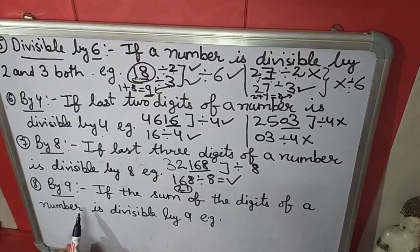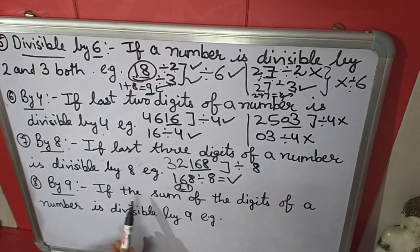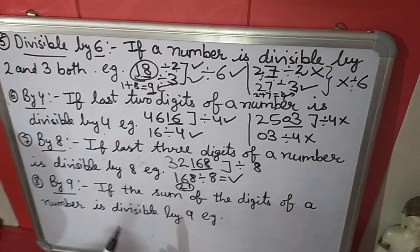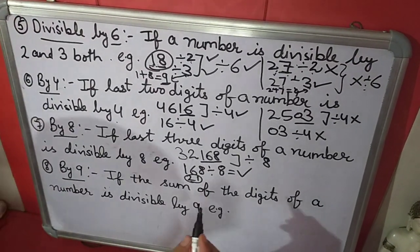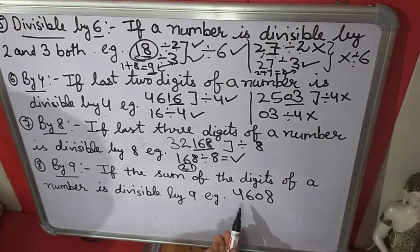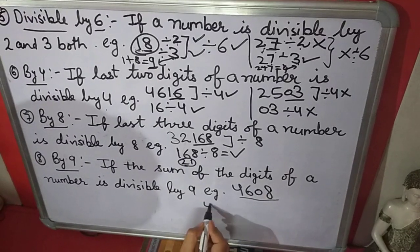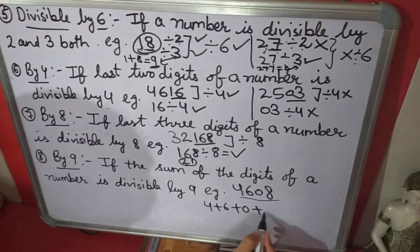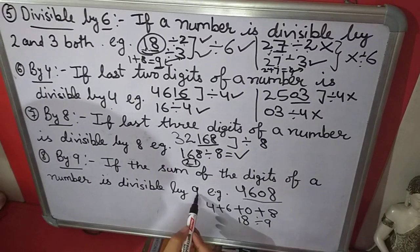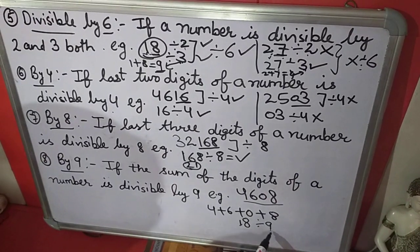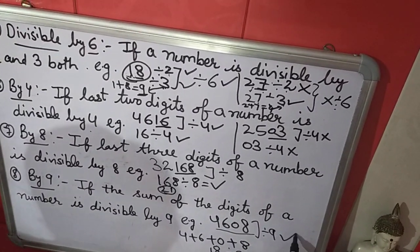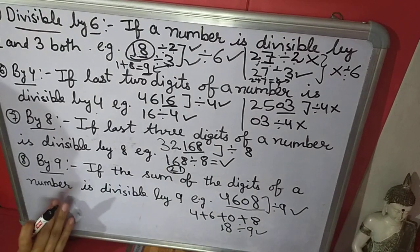The 8th rule is divisibility by 9. If the sum of the digits of a number is divisible by 9, then that number is also divisible by 9. Example: we add all digits — 4 plus 6 plus 0 plus 8 equals 18. And 18 is divisible by 9, so this complete number is divisible by 9. This rule is the same as the divisibility rule of 3.